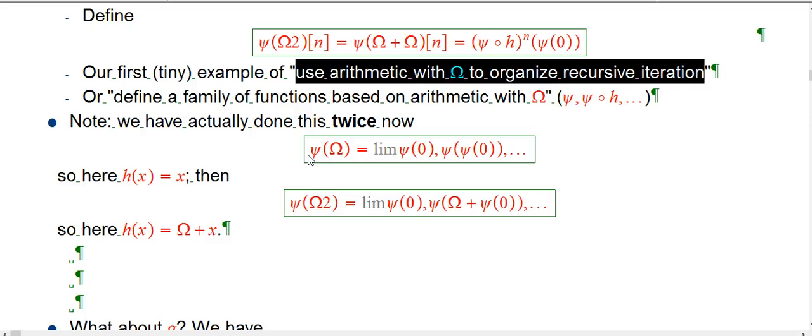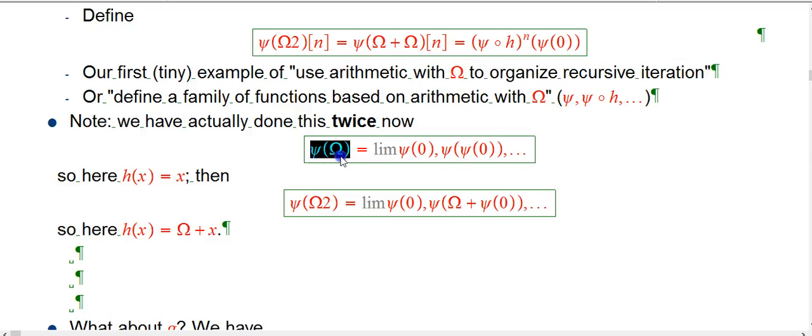If you remember, the very first time omega appeared, psi of omega, we defined that to be the limit of iterating psi. Now it was iterating just psi alone, not combined with anything involving omega yet, because omega was brand new, but it really does follow the same pattern. So here it's an iteration of psi composed with h, where h is just the identity function.